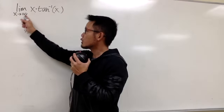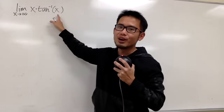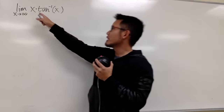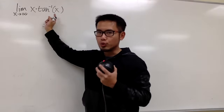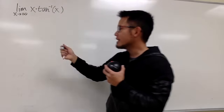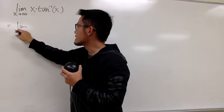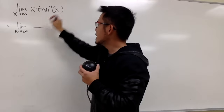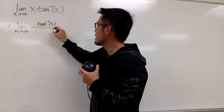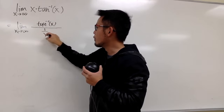Let's calculate the limit as x goes to infinity of x times the inverse tangent of x. It seems like we have a product of two things. I should look at this as the limit as x goes to infinity — keep the inverse tangent of x on top, and once I bring the x down, it becomes 1 over x.